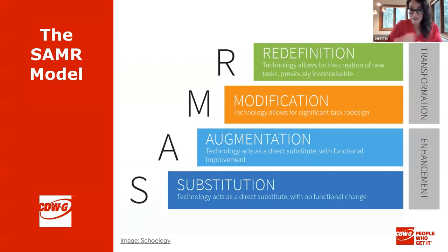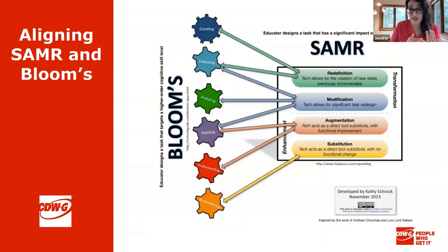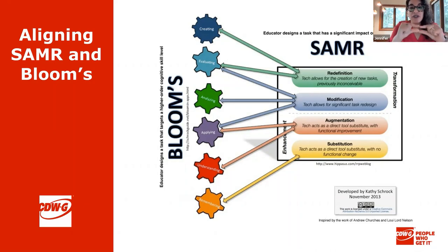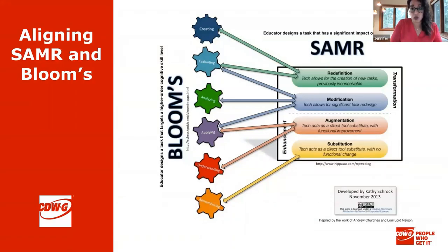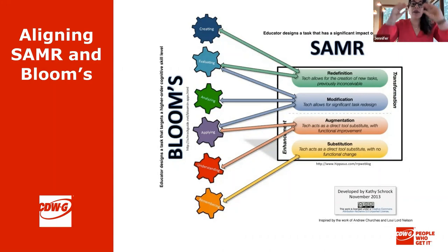I want to align those four levels with Bloom's to give a better idea. Substitution maps to students recalling and remembering — essentially swapping paper and pencil for a Chromebook with no change to lesson objectives. Augmentation means you're tweaking it — students are doing understanding and applying, with a functional improvement like searching the internet or embedding graphics. Modification and redefinition, at the higher tiers, have students creating.